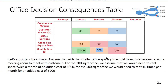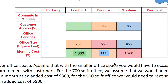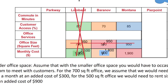Advancing a bit further, we've been able to eliminate office services and are now down to three alternatives: Lombard, Barinov, and Montana. We'd like to equalize on office space. If I had a 700-square-foot office, I might need to rent a conference room for about $300 a month more, so I add $300 to the $1,800. For the even smaller Barinov facility, I'd have to add $900. Now I've added those costs, I can eliminate the office space criterion — and I can eliminate Lombard, because Montana is better and costs less.